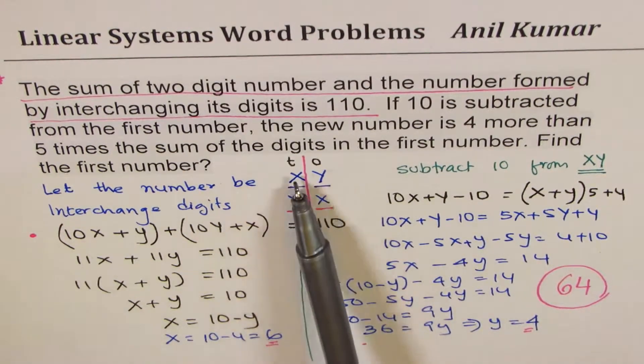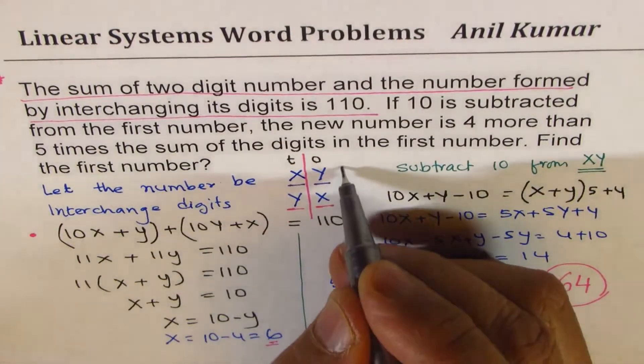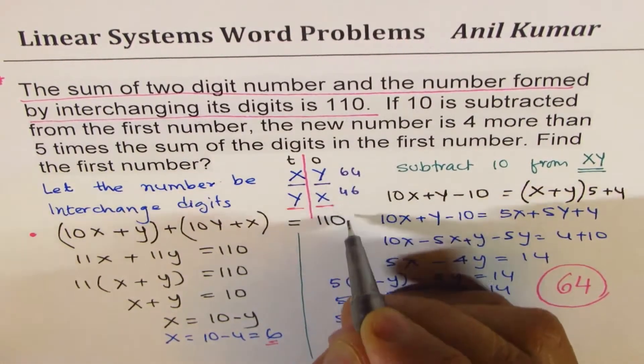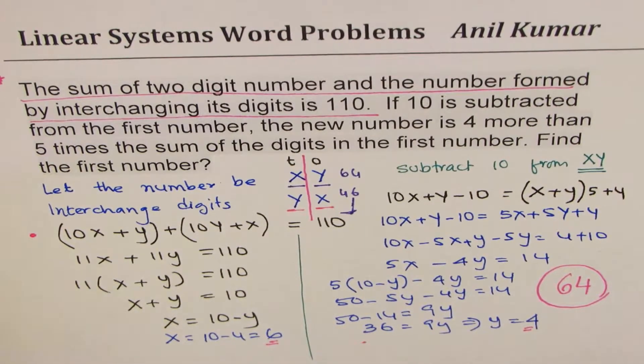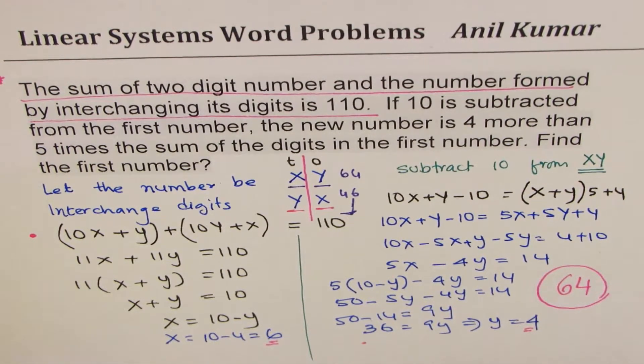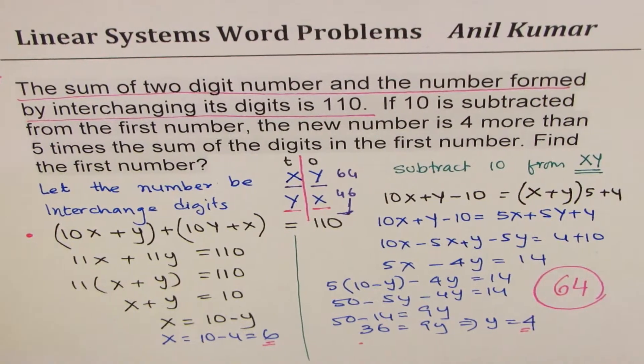So that is how the question can be solved. And now you can figure out, if I add 64 here, and then 46 here, when you add, you do get 110. So it makes sense. So I'd like you to go through this explanation and the way we made equations.